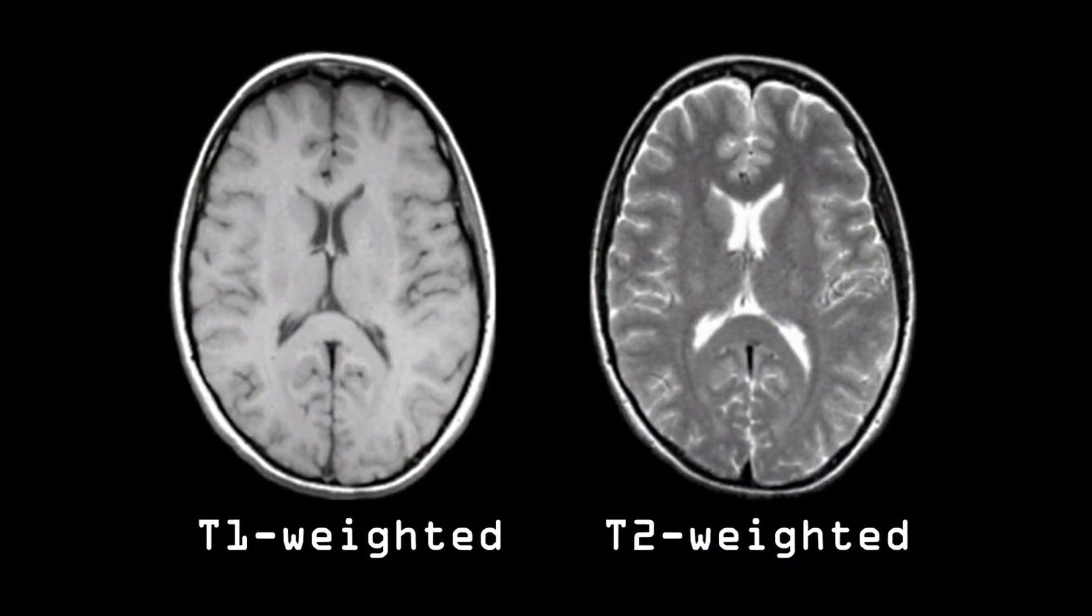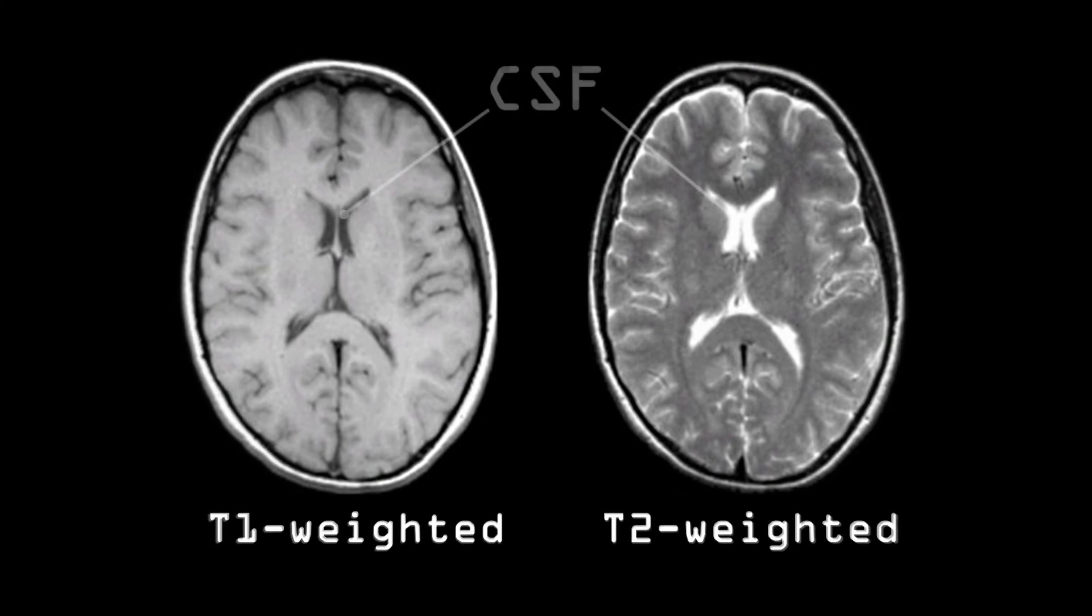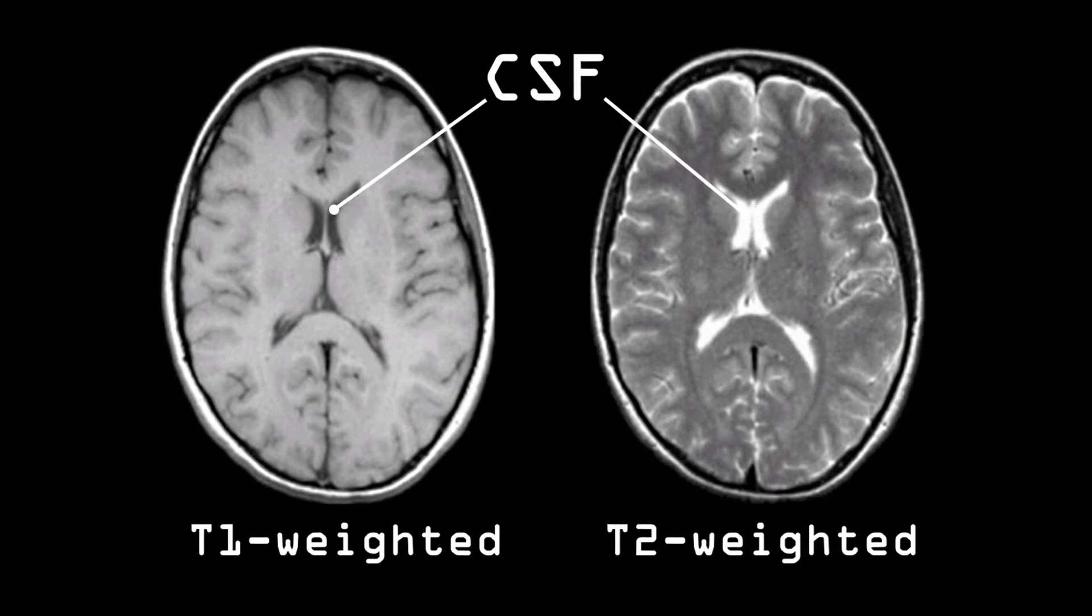In a T1-weighted image, for example, areas with a higher water content, such as the cerebrospinal fluid, appear to be dark. Whereas in a T2-weighted image, the same areas appear as white.